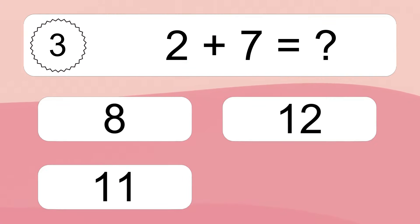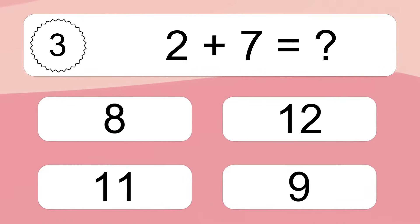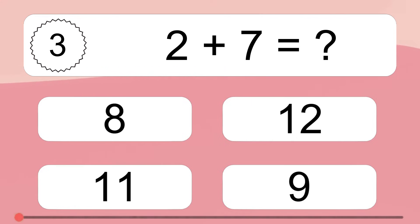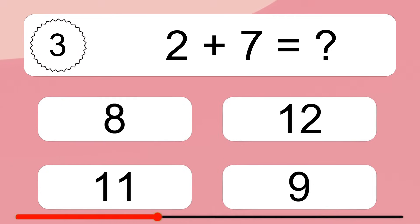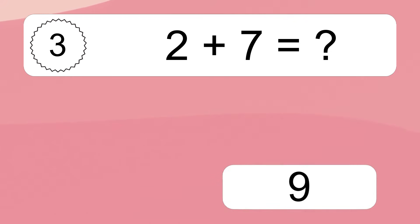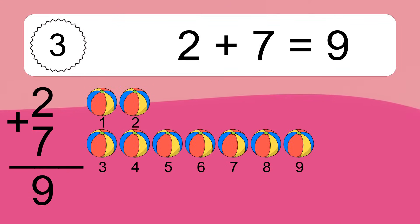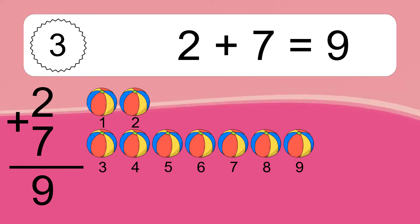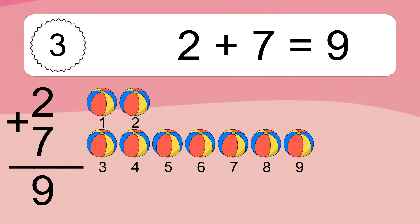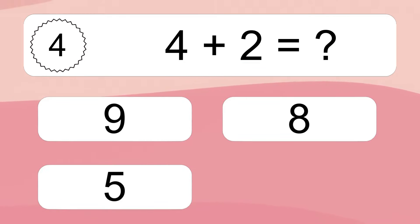2 plus 7 equals what? 2 plus 7 equals 9. Let's count it: 1, 2, 3, 4, 5, 6, 7, 8, 9.